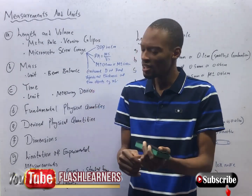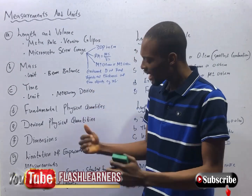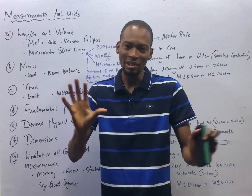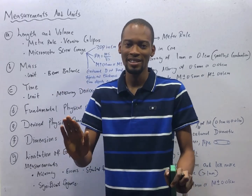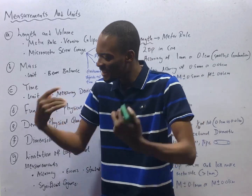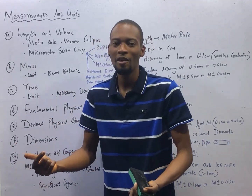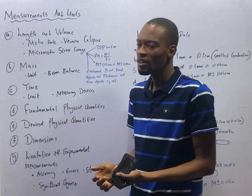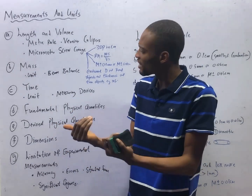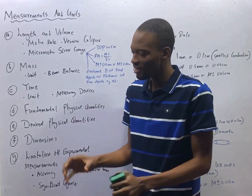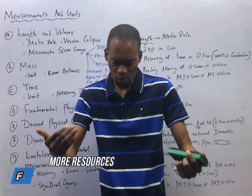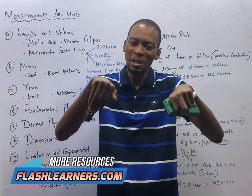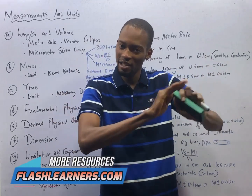Fundamental quantities — they are on their own. They don't depend on any other quantity, so they are independent of any other quantity. And these fundamental quantities have their own units, so they don't depend on any other units.